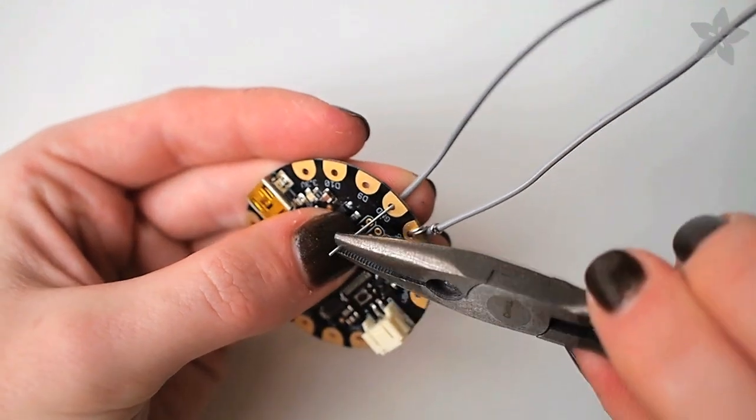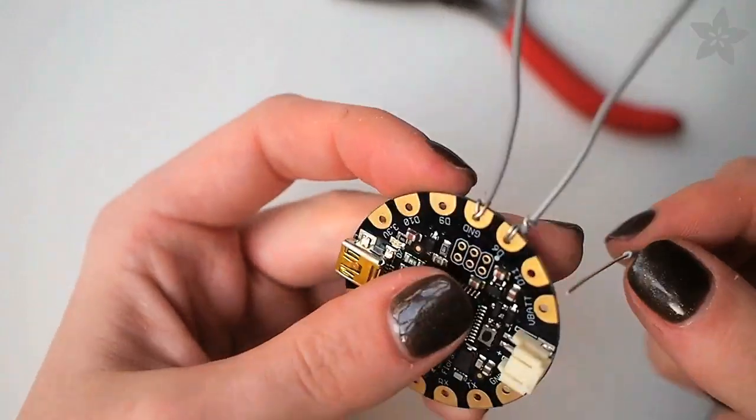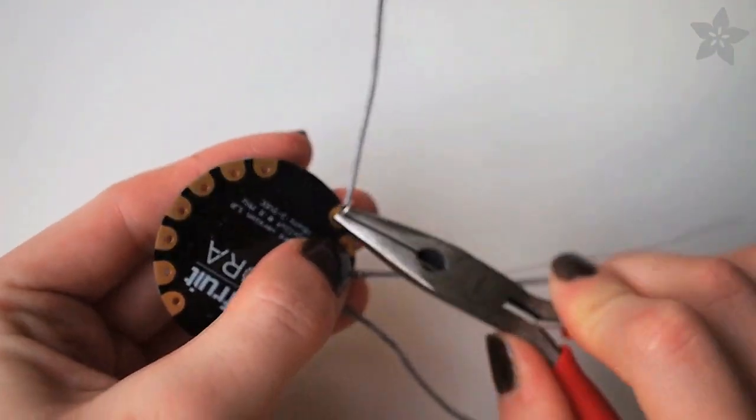Repeat this process for the pin marked GND for ground and then add one more wire at the hole marked VBAT which is the voltage coming out of the battery.